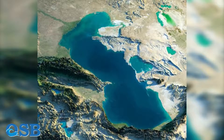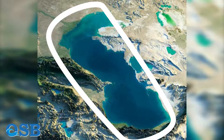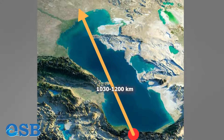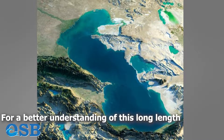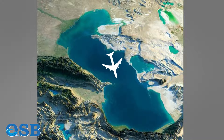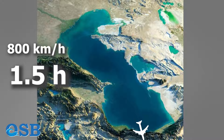At first glance, we can imagine that the Caspian Sea has a shape similar to a curved rectangle, with a length 3 to 4 times greater than its width. The distance from the southernmost to the northernmost place of the Caspian is approximately 1,030 to 1,200 km, which is its length. The width of this water basin can be 193 to 435 km. To understand this long length, traveling by airplane at 800 km per hour from north to south would take 1.5 hours.